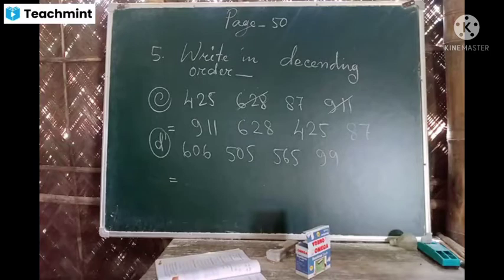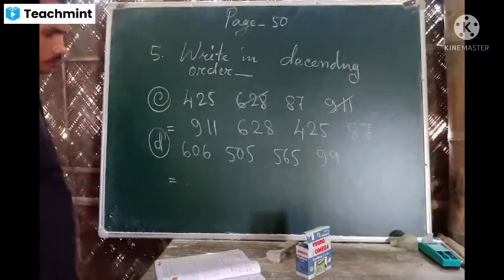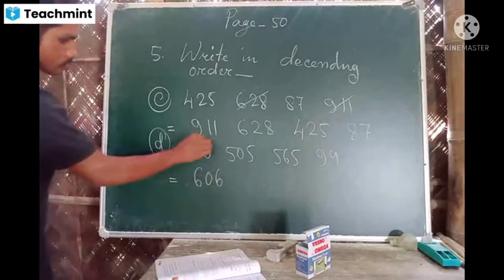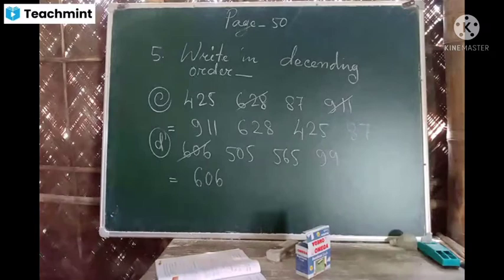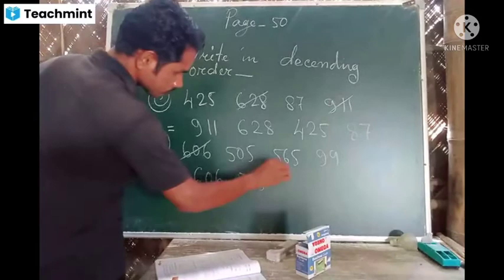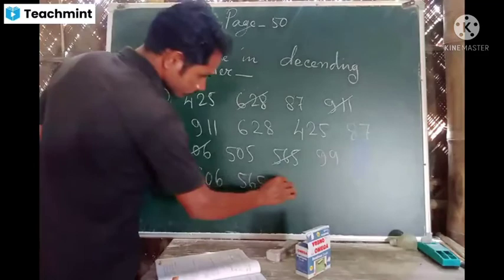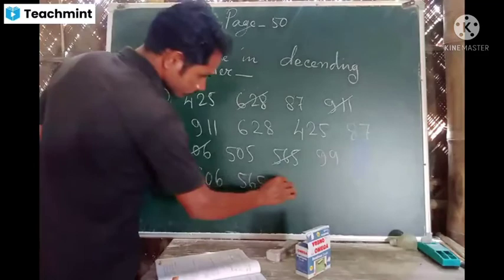Which number is big? 606, good. Next, which number is big? 565. 99. Good, 99.